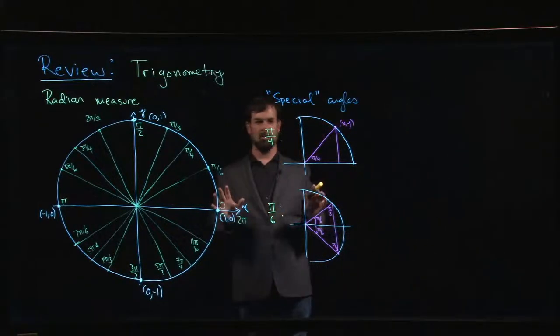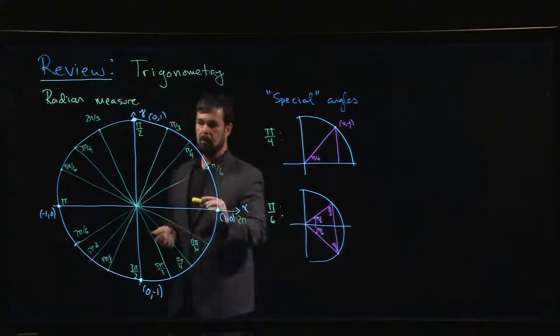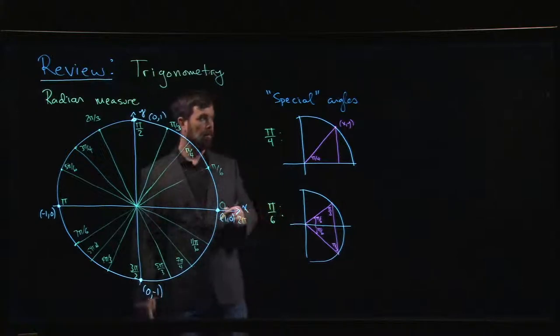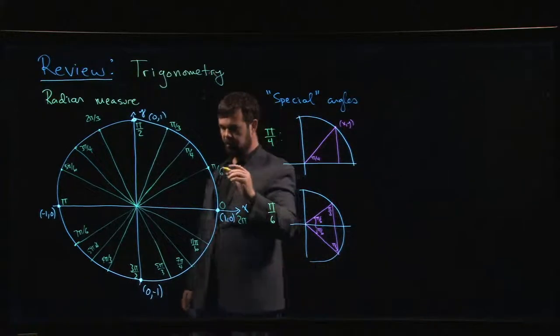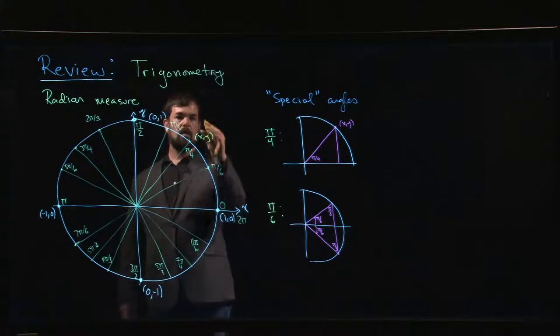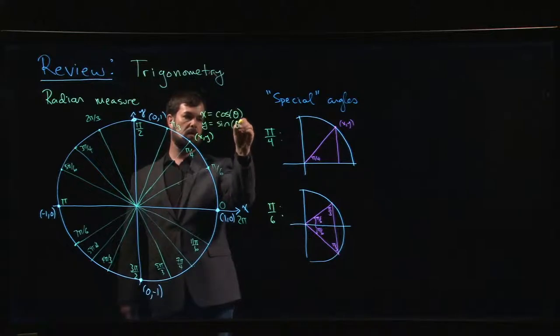In this video, we're going to try to derive values for sine and cosine for these special first quadrant angles. There's a couple that we can get right away, because we know that for any point on the circle with coordinates x and y, x is cosine of my angle and y is sine of the angle.